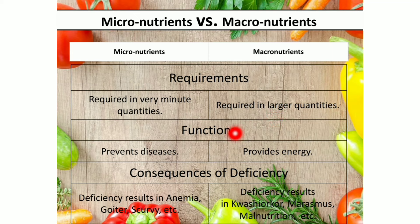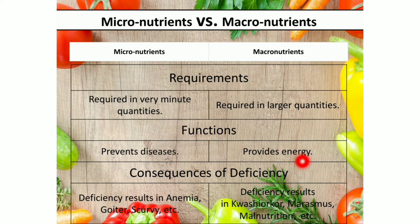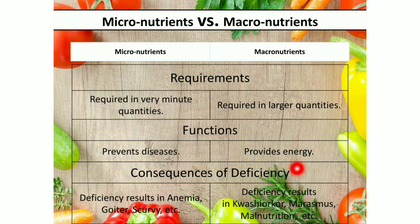On the basis of function, micronutrients are required by our body for protection against disease. Macronutrients are required for providing energy and structural support to our body.